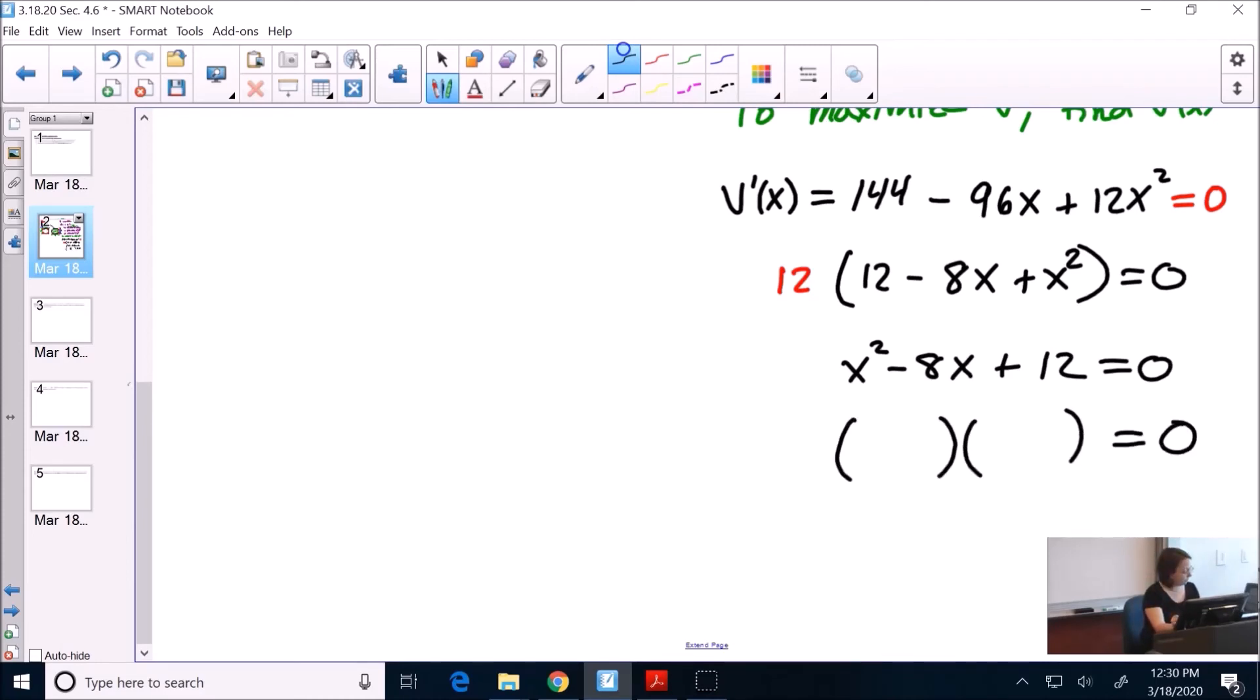Two parentheses equal to 0. So we have x and x. We have two numbers that multiply to be positive 12, but add to be negative 8. What multiplies to be 12, but adds to be negative 8? How about negative 2 and negative 6. x equals 2 and 6.